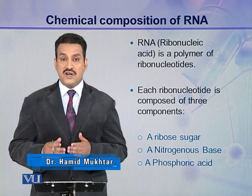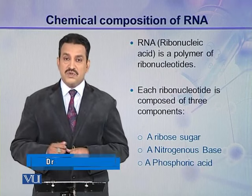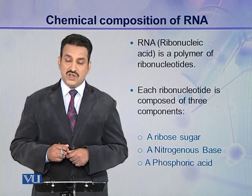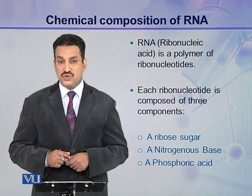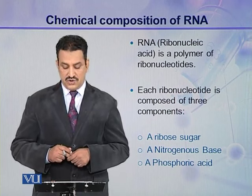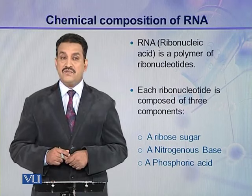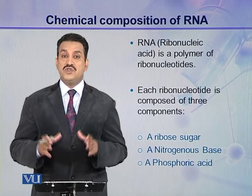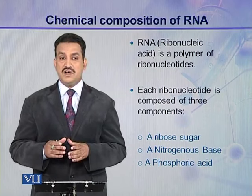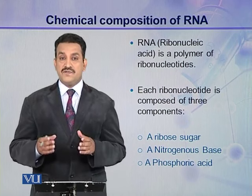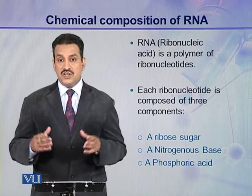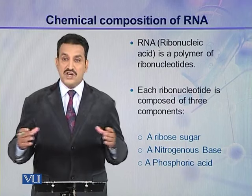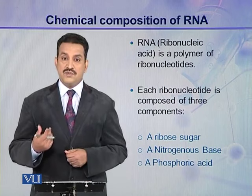Each ribonucleotide is made up of three components: ribose sugar, nitrogenous base, and phosphoric acid. These three components join together and make a ribonucleotide. Different ribonucleotides join together and make a polynucleotide, which is ribonucleic acid.